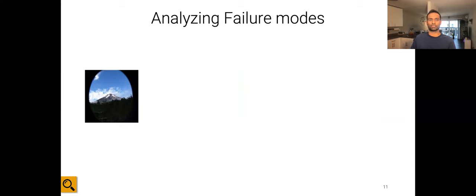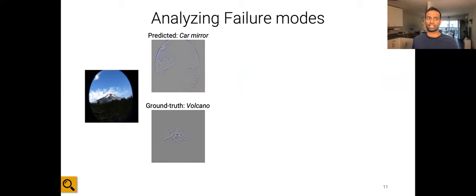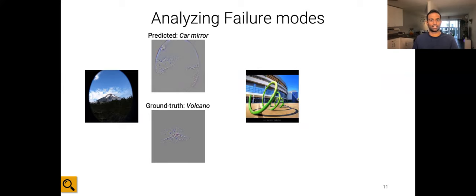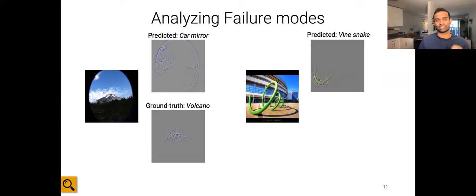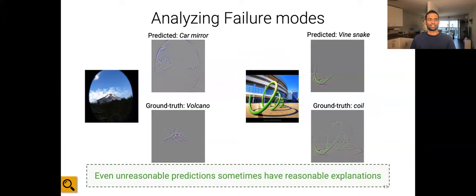You can use GradCAM to understand the failure modes of networks. For example, the model predicted an image to be a cardboard mirror — and if you see the explanation, it looks very much like one. The ground truth category was volcano, and the model is able to identify the volcano. For another image predicted as a wine snake, the visualization looks very much like one, but visualizing the ground truth category 'coil' shows it looking at the entirety of the coil. What we find is that even unreasonable predictions sometimes have reasonable explanations.